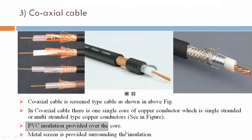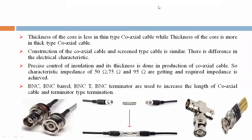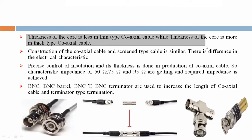PVC insulation is provided over the core, and a metal screen is provided surrounding the insulation. The thickness of the core is less in thin type co-axial cable, while the thickness of the core is more in thick type co-axial cable.